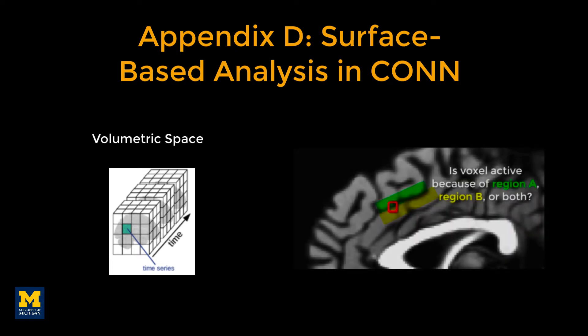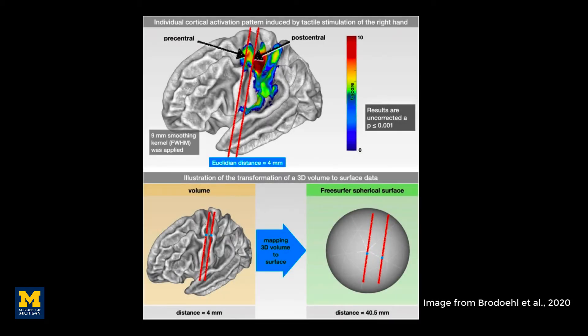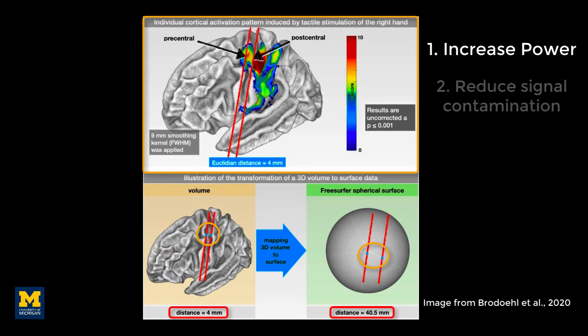The pre-processing step of smoothing can average signal across functionally heterogeneous areas, which can be especially problematic for connectivity analysis. For example, the ridges of two nearby gyri can be a few millimeters away from each other when viewed from above, even though the actual peak-to-peak distance can be many times longer. This is more accurately represented by reconstructing the image into surface space, which can both increase power and reduce the chance of smoothing across different regions or tissue types.